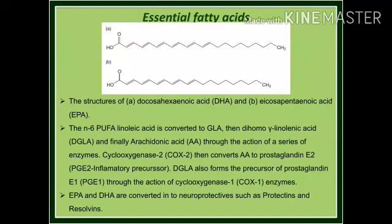Looking at the structure, the first structure is docosahexaenoic acid (DHA) and the second structure is eicosapentaenoic acid (EPA). The omega-6 fatty acid such as linoleic acid is converted into GLA, then to DGLA (dihomo-gamma-linolenic acid), and finally to arachidonic acid by different enzymes.